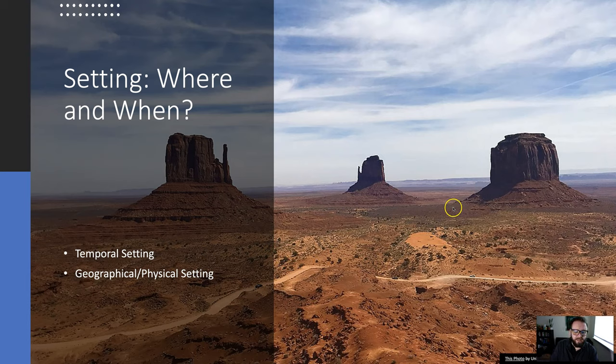Something like Monument Valley like this is, and this is really the most important part when it comes to setting. Setting really, in addition to giving us where and when things are happening, it draws a lot on our collective unconscious, the knowledge that we have in the background. We see Monument Valley here, which is one of the most iconic landscapes as far as the American Western is concerned.